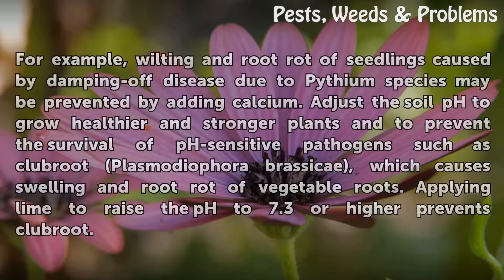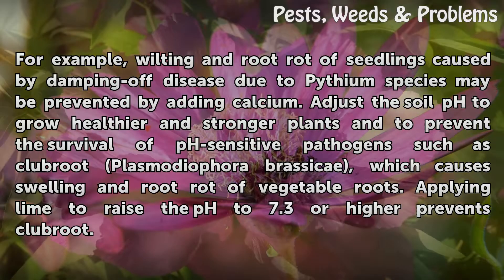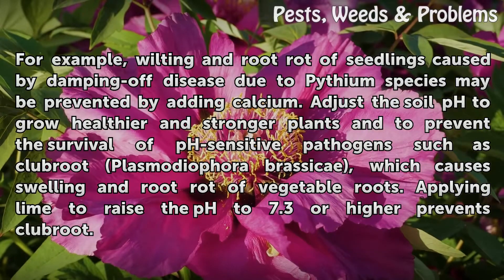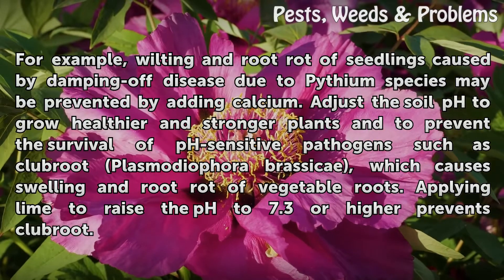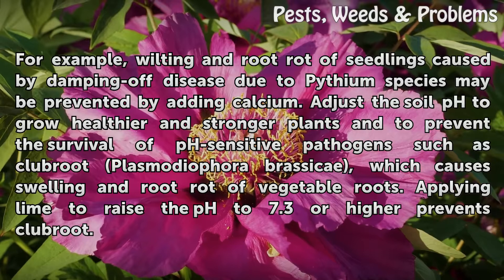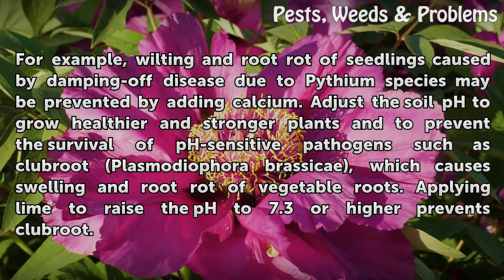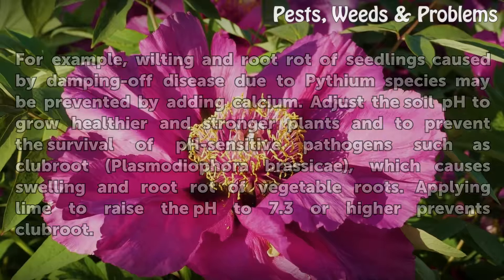Preventing nutrient deficiencies and adjusting the soil pH are other methods to treat soil diseases. For example, wilting and root rot of seedlings caused by damping off disease due to Pythium species may be prevented by adding calcium. Adjusting soil pH grows healthier and stronger plants and prevents the survival of pH-sensitive pathogens such as Plasmodiophora brassicae, which causes swelling and root rot of vegetable roots. Applying lime to raise the pH to 7.3 or higher prevents club root.